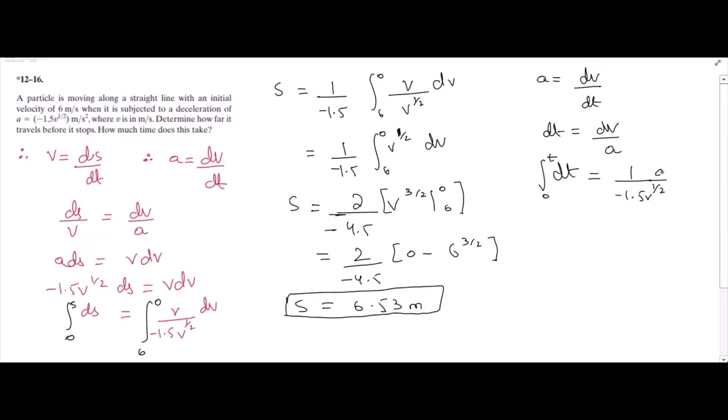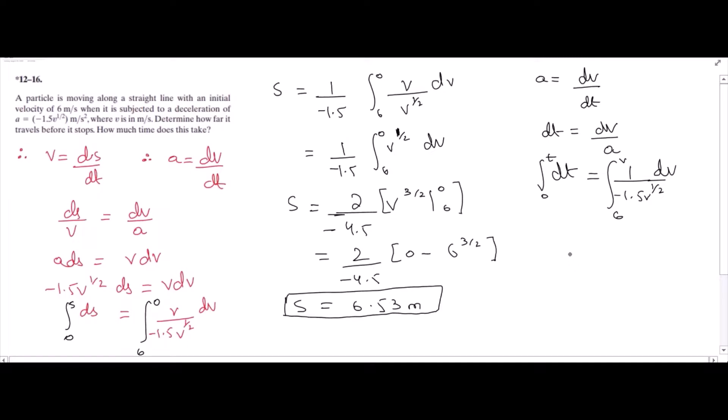Upon solving the left hand side, we have t is equal to 1 over negative 1.5. I can take it out, that would be negative 1 over negative 1.5. The integration of dv over v to the half would give us negative 1.5 times v to the 1 over 2, and that would be 2 right here, and we have the limits from 0 to 6.